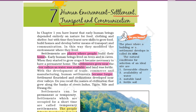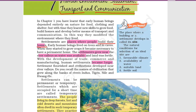Now, what are settlements? Settlements are places where people build their homes — jahaan per log apna ghar banaate hain, unhe hum settlements bolte hain. Early humans used to live in caves, but as people started to grow it became very necessary to have a permanent house. The initial houses were always near river valleys because the land was fertile and it was easy to get water for living.